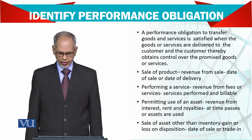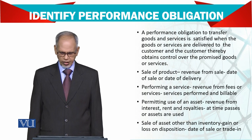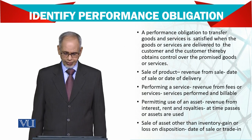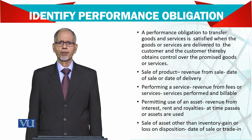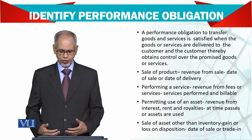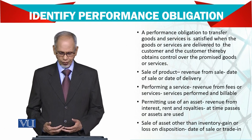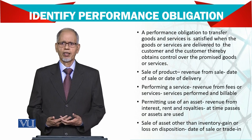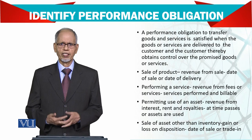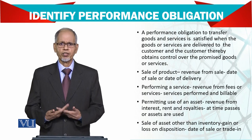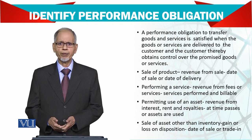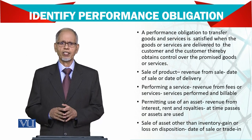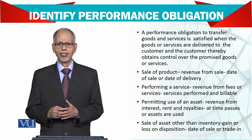Permitting use of assets — revenue from interest, rent, and royalties. This is recognized as time passes and assets are used. Sometimes we rent out our assets, so the rent is received on a time basis. For royalties, for example, as an author of a book, you receive royalty depending on what agreement you enter into — whether it is on a production basis or a sales basis.